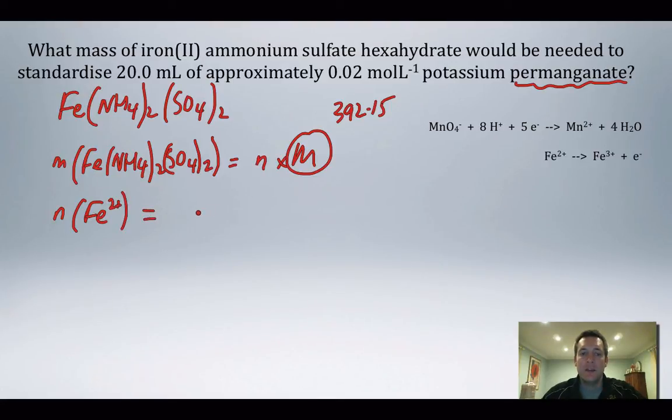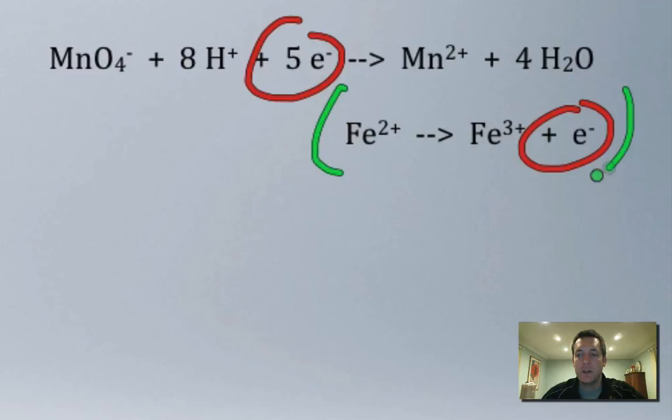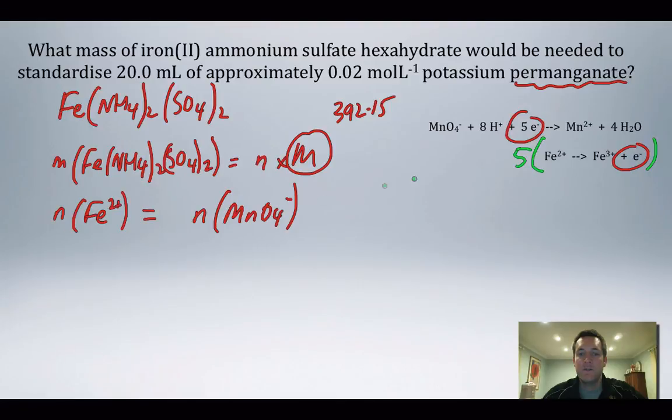I'm going to relate that to the number of moles of something else. In this case, I'm going to relate it to the number of moles of permanganate ions. Is this expression true? Let's have a look at the half equations. I've got one electron there and five there, so no, that expression certainly isn't true. I've got to multiply this equation by five, which means that the number of moles of iron(II) is five times greater than the number of moles of manganate ions.